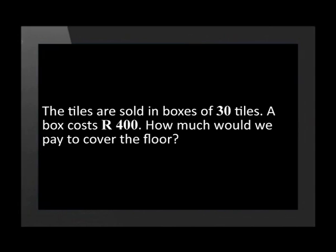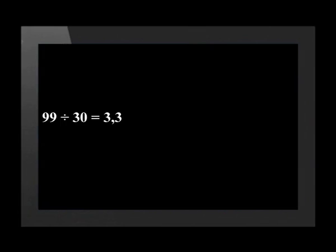Let's extend this problem by adding in a cost factor. The tiles are sold in boxes of 30 tiles. A box costs 400 Rand. How much would we pay to cover the floor? We first need to calculate how many boxes we should buy. We needed 99 tiles to cover the floor. As there are 30 tiles in a box, we divide 99 by 30, which gives us 3.3 boxes. Since we can only have a whole number of boxes, we must round up to 4 boxes. 4 times 400 Rand gives a total cost of 1,600 Rand.